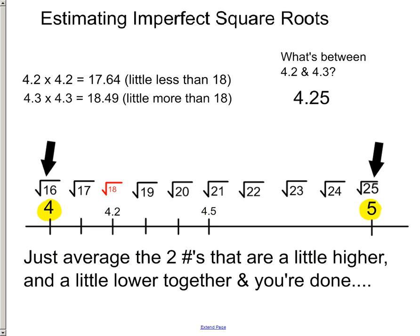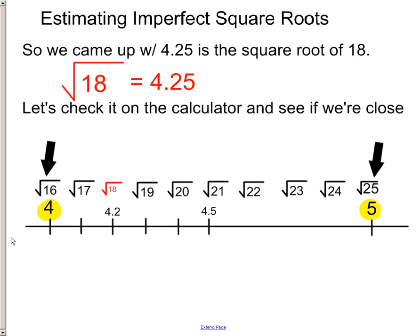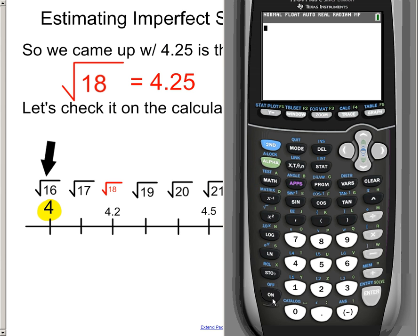And then the last thing that we have to do is, how about we go check it on the calculator? If you've got the TI-84s, you can hit the second button, and then hit your X-squared button, because right above it is your radical sign. And you just type in 18. Hit enter. 4.242640687. And it just keeps going on and on and on. We estimated 4.25. There it is, it's 4.24. That's pretty close. So, let's go through and try one more.